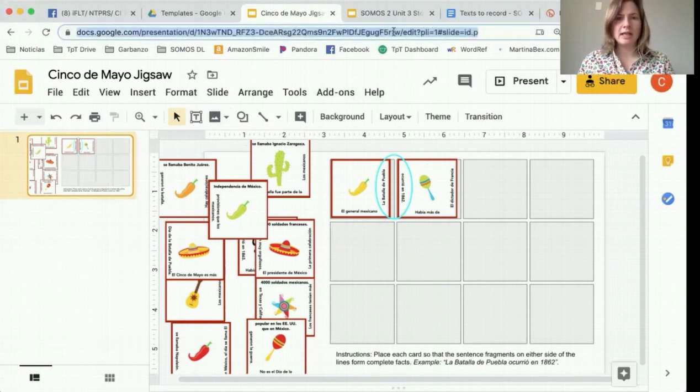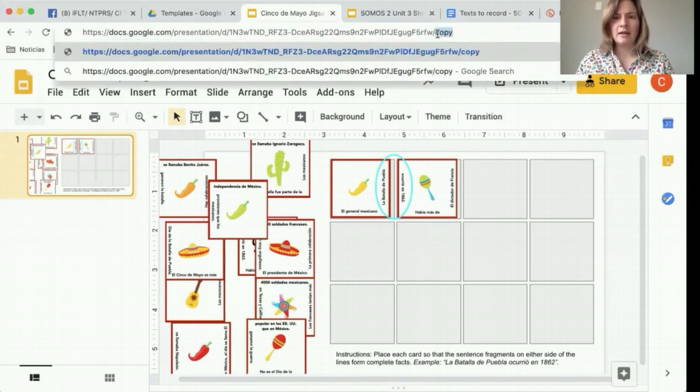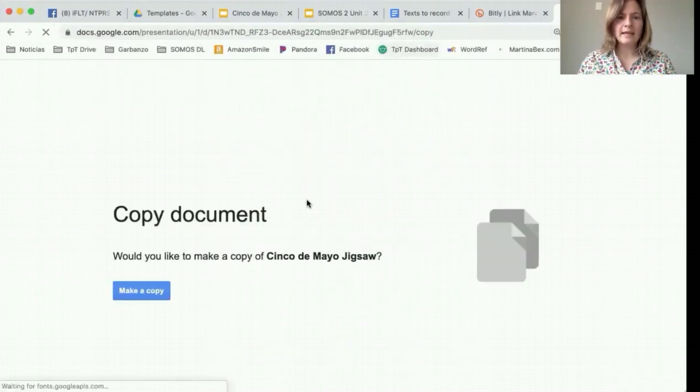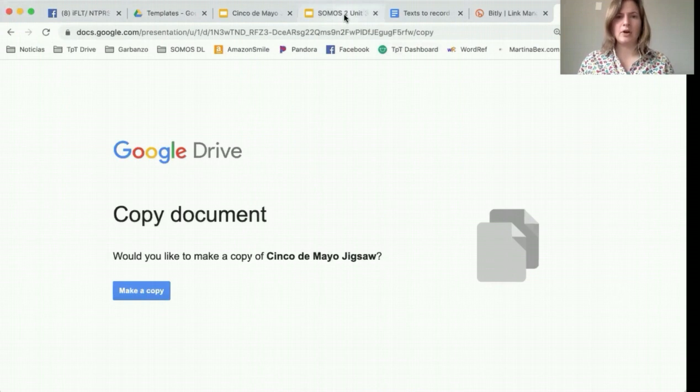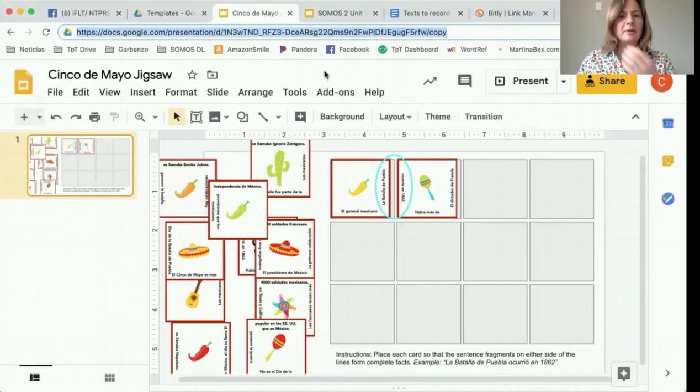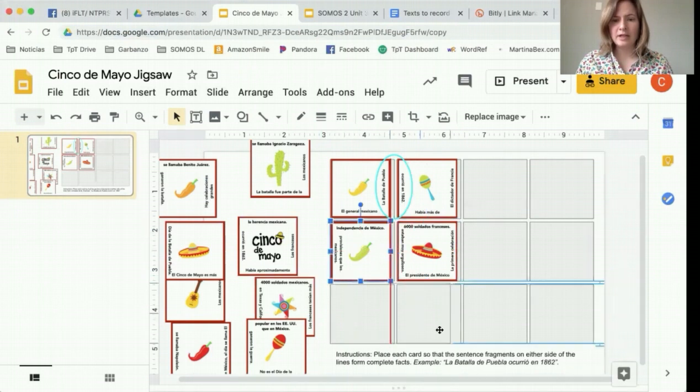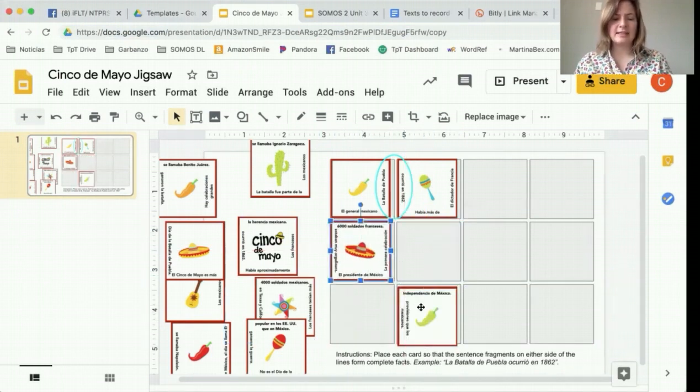What you need to do is highlight the URL here and then delete everything after this last backslash and replace it with the word 'copy.' Then highlight and copy the whole link and send that to students. And what it'll do is it will force students to make a copy when they get it. So if you see here, if I put in the link in a new tab, it'll say Copy Document, would you like to make a copy. So students will have their own copy and then they can just complete the activity and send it to you. That's it. So students are just using this in editing mode and they're moving these cards around until they're all placed and all of the sentences make sense.